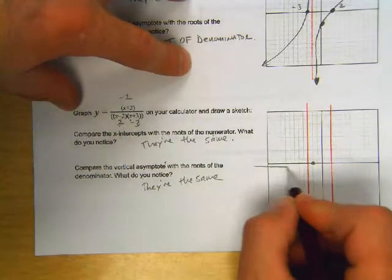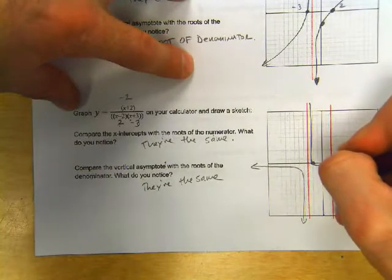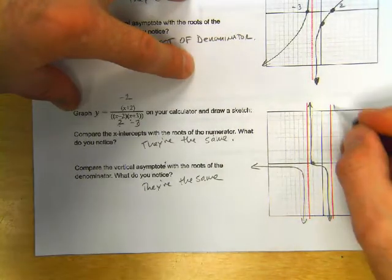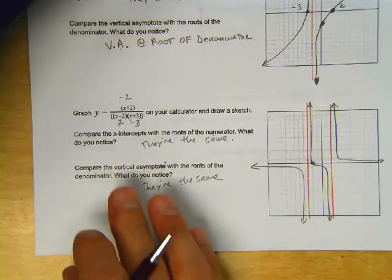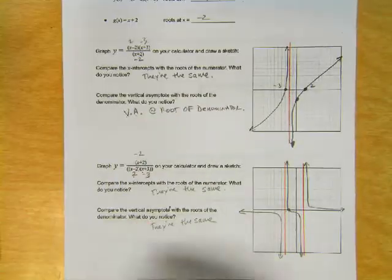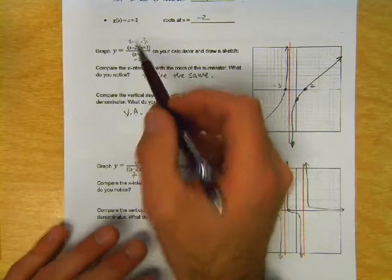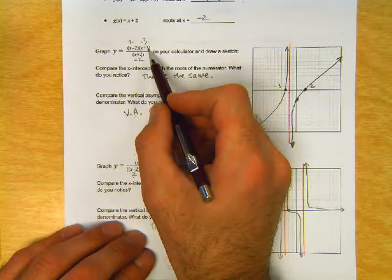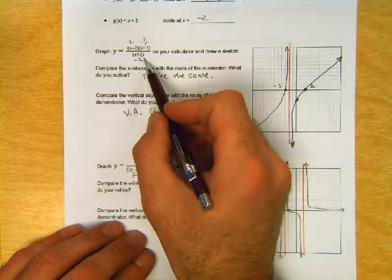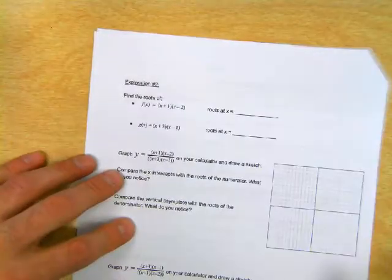Our function looks like this. Based on these two mini-explorations, can you draw any conclusions? What happens at the roots of the numerator? What happens at the roots of the denominator? Let's look for a pattern and go to the next exploration.